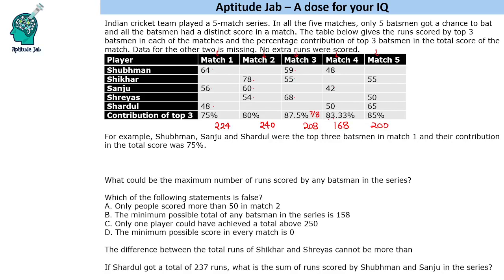Now for the remaining two batsmen in each match: in match one, total is 168 so the remaining two share 56 runs. In match two, total is 192... remaining is 48. In match three, total is 182 so remaining is 26. In match four, total is 168 so remaining is 28. In match five, total is 200 so remaining is 30.